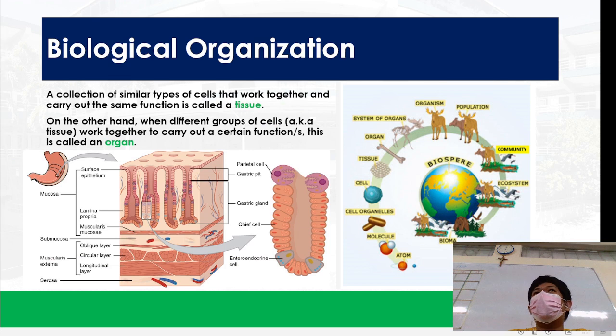We proceed to multicellular organisms - we still have tissue. Bacteria don't have tissue because they are single-celled organisms, so at least one cell is considered an organism already. But for multicellular organisms, we still have some further organization of cells, one of which is tissue. Tissue is the collection of similar types of cells that work together and carry out the same function. For example, epithelial tissue - when you say epithelial tissue, it means that all of those cells within that tissue are called epithelial cells.